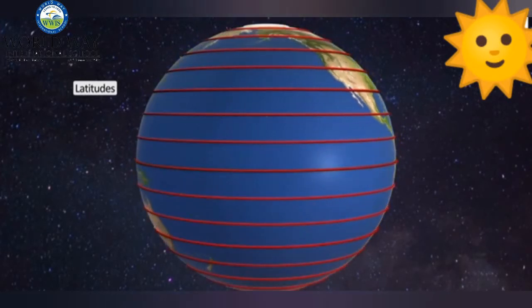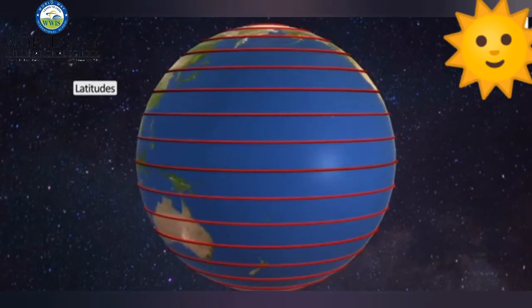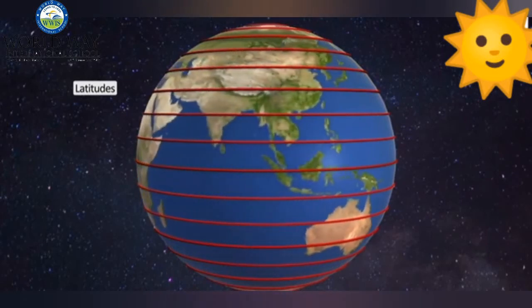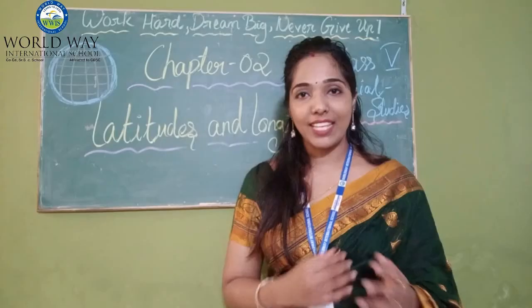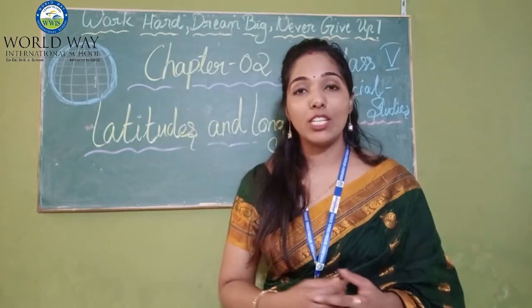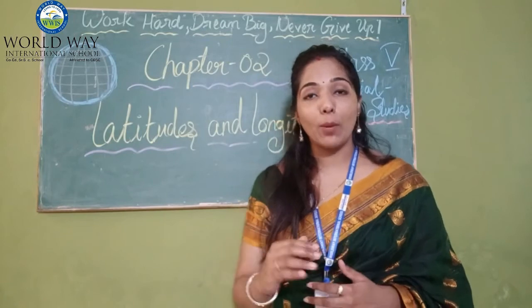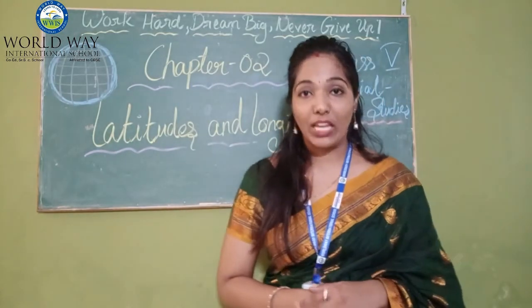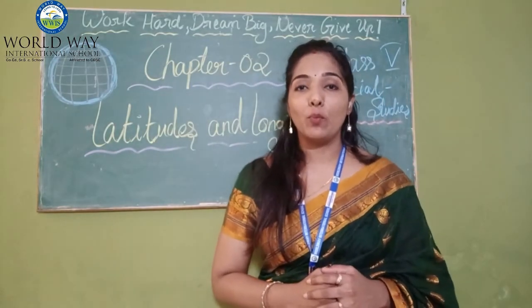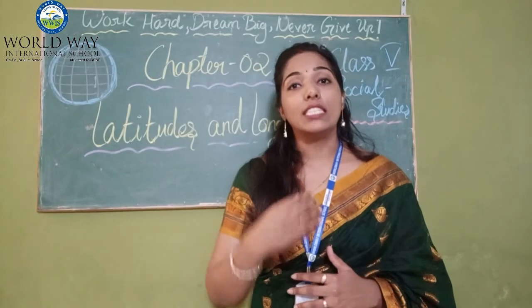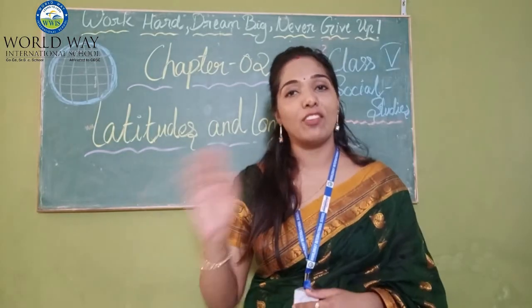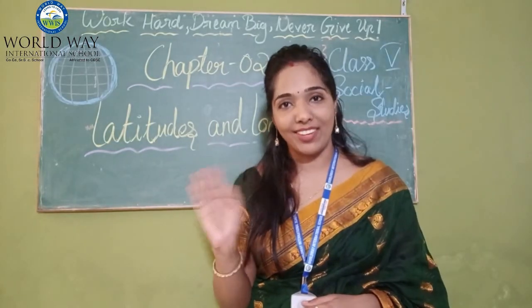The Earth is round, and so the length of latitudes decreases as we move towards the poles. Now I think you have understood the clear picture about latitudes. In the next video, we will come with more detailed things about longitude. Bye everyone!